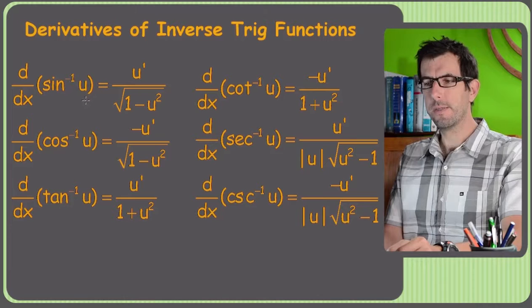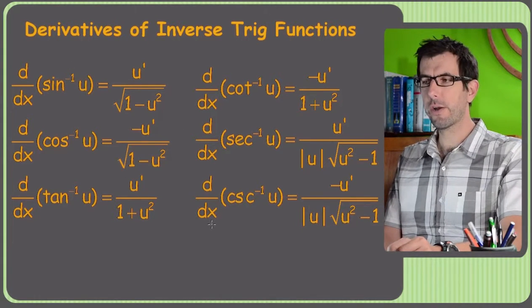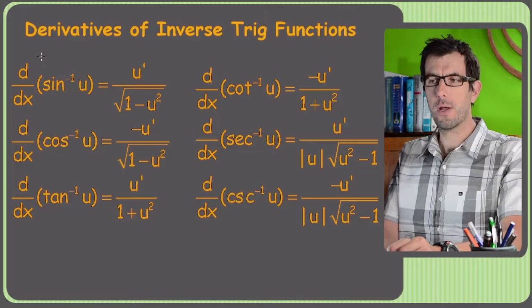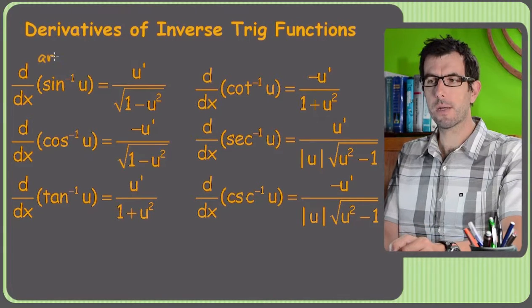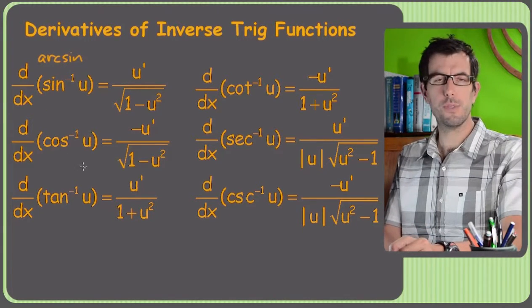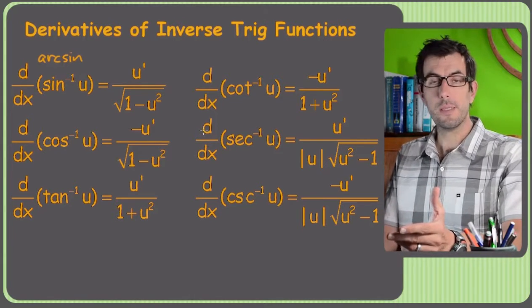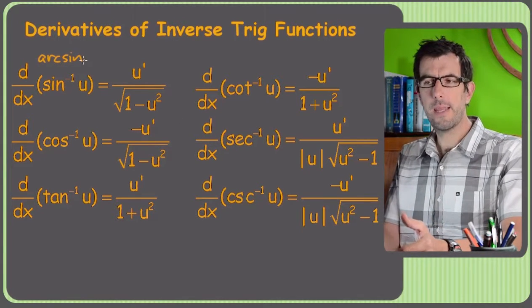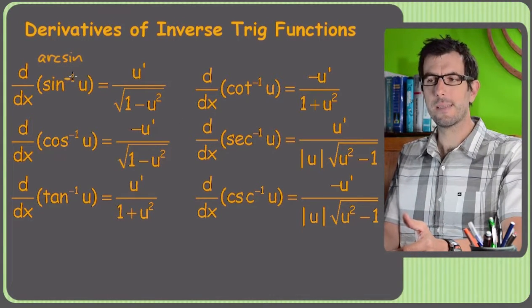So if you look at these formulas, we just got the six inverse trig functions here, and of course these could also be written as arc. So it could be arc sine, arc cosine, arc tangent, and so forth. Same rule applies. Arc sine and inverse sine to the negative one, exactly the same thing.